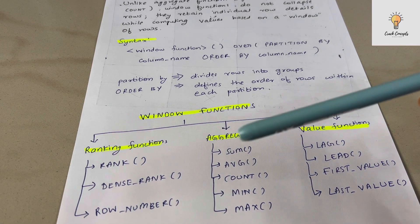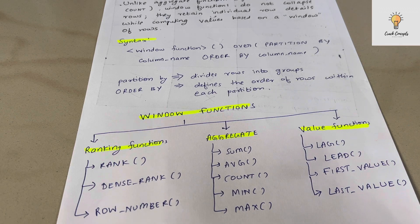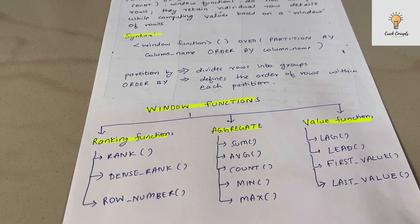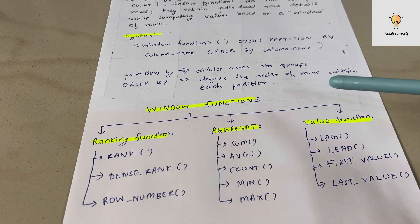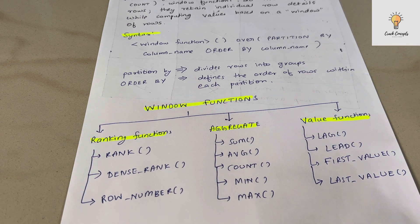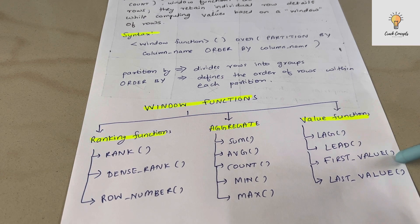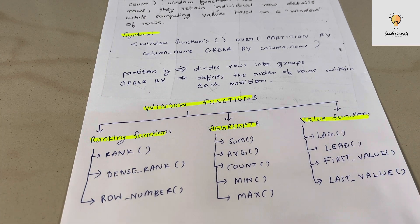There are three types of window functions: ranking functions, aggregate functions, and value functions. In ranking functions we have RANK, DENSE_RANK, and ROW_NUMBER. In aggregate functions we have SUM, AVERAGE, COUNT, MIN, MAX — so you can use aggregate functions as window functions as well. Value functions include LEAD, FIRST_VALUE, and LAST_VALUE.